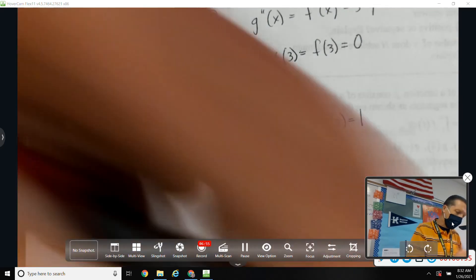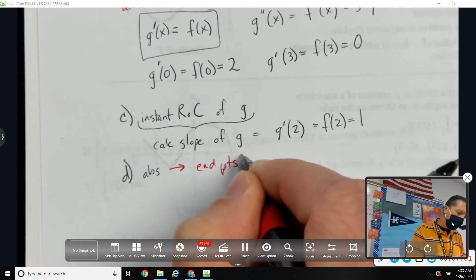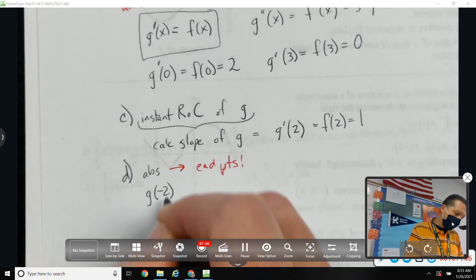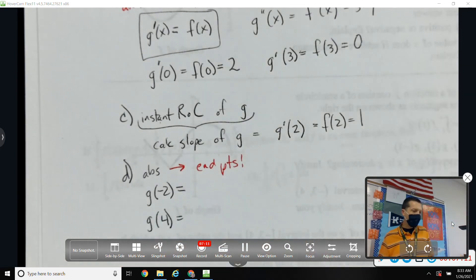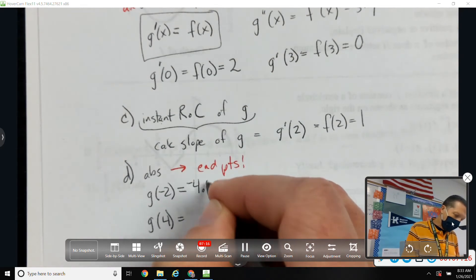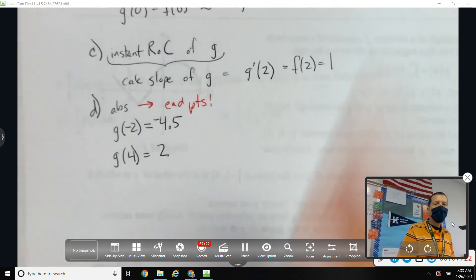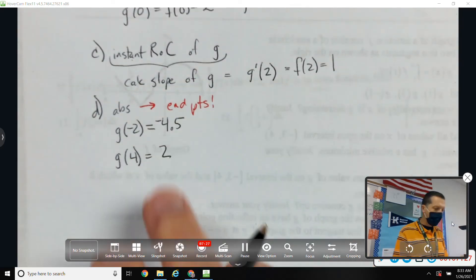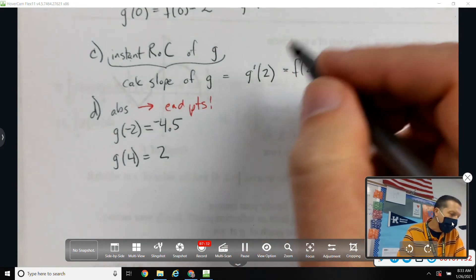Part D, find the absolute maximum of G on the interval negative 2 to 4. Absolute sets off alarm bells in my head that I need to check the endpoints. So I need to find G of negative 2 and G of 4. And it would be nice if I already found those. And I did. G of negative 2 is negative 4.5. G of 4 was 2. So when I saw absolute, it made me think endpoints.